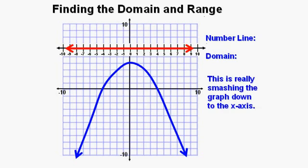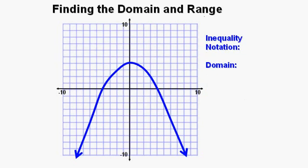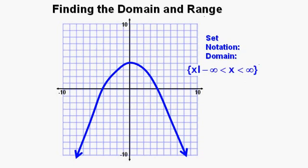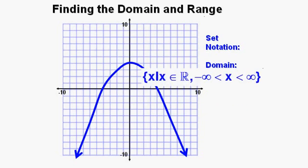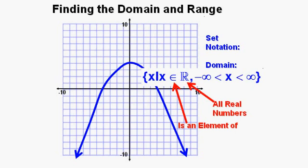This is like smashing the function to the x-axis. For the inequality notation, the domain can be described as x is greater than negative infinity and less than positive infinity. For set notation, we place it within brackets: x such that x is greater than negative infinity and smaller than infinity. That little vertical line segment after the first x means 'such that.' You might also see: x such that x is an element of all real numbers, where this e-looking symbol means 'is an element of' and the capital R represents all real numbers.